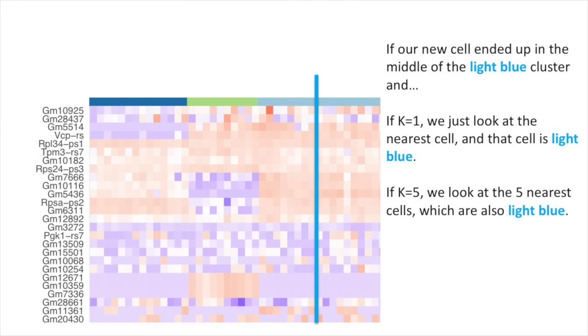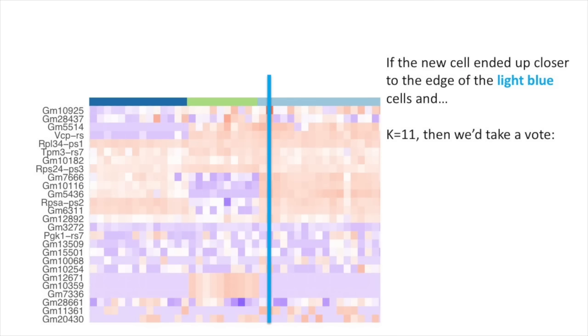If K equals 5, we'd look at the five nearest cells, which are also light blue. So we'd still classify the unknown cell as light blue.